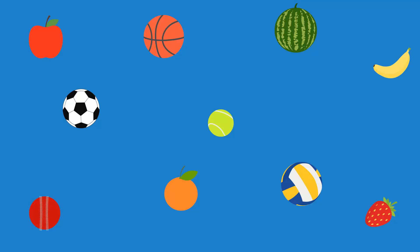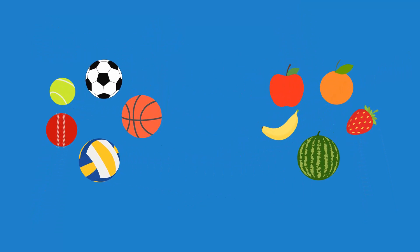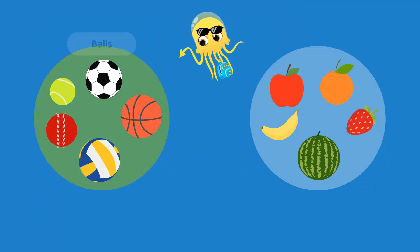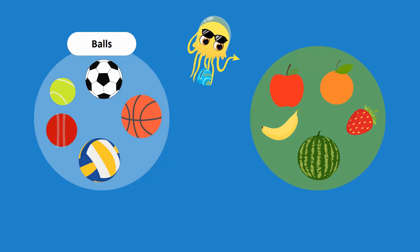As you can see, the objects are randomly arranged. Some are fruits, while some are balls. We can therefore rearrange the objects into two groups: a group of balls and a group of fruits.